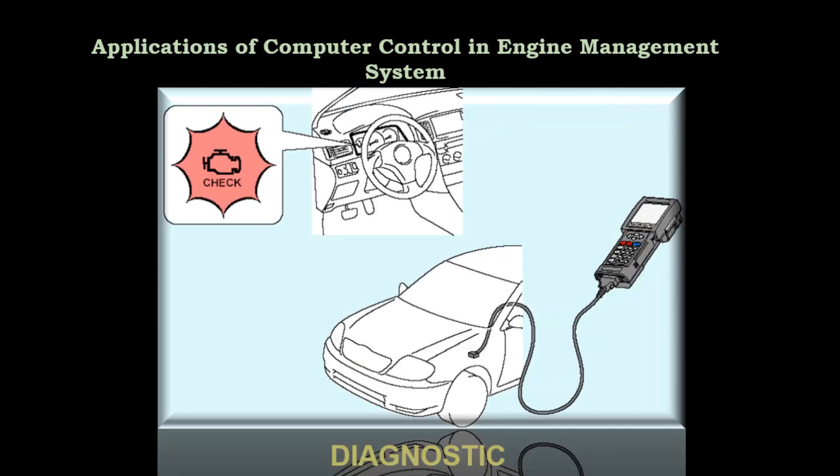Computer-controlled systems contain a diagnostic function to aid technicians during troubleshooting. The ECM constantly monitors input signals from the sensors. When the ECM detects a malfunction, it stores it in the form of diagnostic trouble codes and illuminates the malfunction indicator lamp or MIL. Technicians can retrieve these trouble codes by prompting the ECM to output them via MIL blinking or by using a handheld tester commonly known as a scanner. A video demonstration on retrieving diagnostic trouble codes will be uploaded.